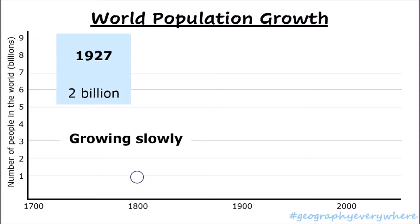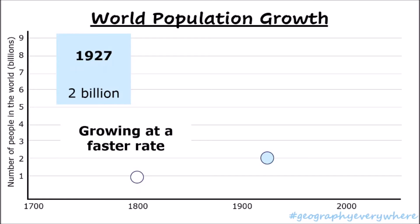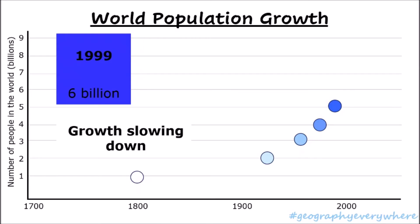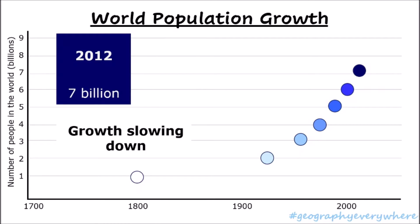We reached 2 billion people on Earth in 1927. At this point, the population was already growing at a faster rate than it ever was before. We reached 3 billion people in 1960, and at around this time, although the population was still growing, the growth was slowing down — we weren't growing as much as before. We reached 6 billion people in 1999 and 7 billion people in 2012. It is projected that in 2025 we will reach 8 billion people living on Earth.